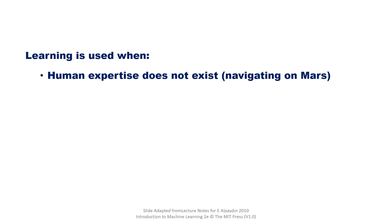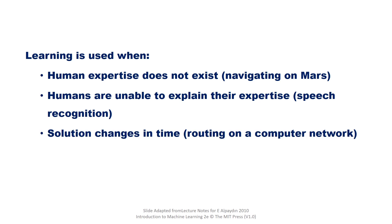Humans are unable to explain their expertise—for example, speech recognition. Solution changes in time—for example, routing on a computer network. Solution needs to be adapted to particular cases—for example, user biometrics. If we want to apply machine learning to a particular problem, the following three components should be there.